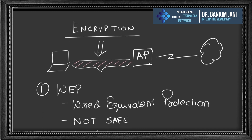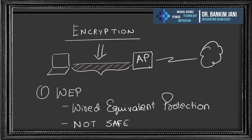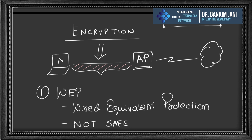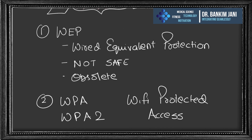In wireless, encryption goes from the device to the access point only — not end-to-end like a VPN. The first encryption standard was WEP (Wired Equivalent Protection), which was a big joke — completely insecure and now obsolete. One should never use WEP as it takes only seconds to break.